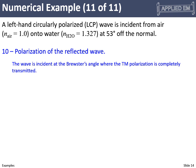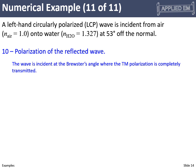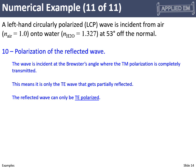The very last thing: the polarization of the reflected wave. The wave is incident at Brewster's angle, meaning the TM polarization is completely transmitted. Our input wave is circularly polarized, so it contains both TE and TM components. Since TM is completely transmitted and TE is only partially transmitted, the only thing getting reflected is the TE polarization — so the reflected wave is purely TE polarized.